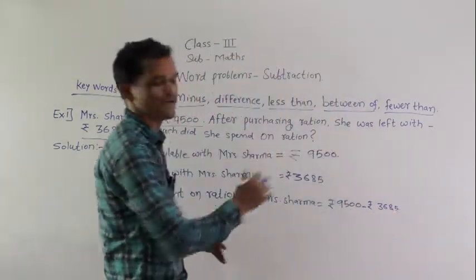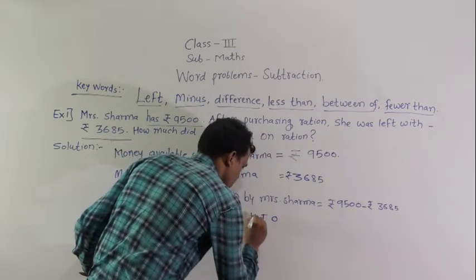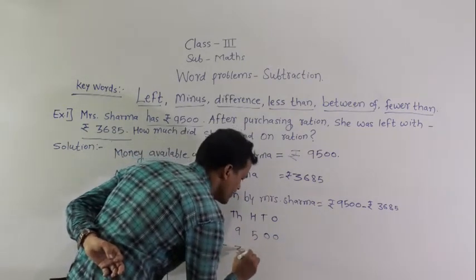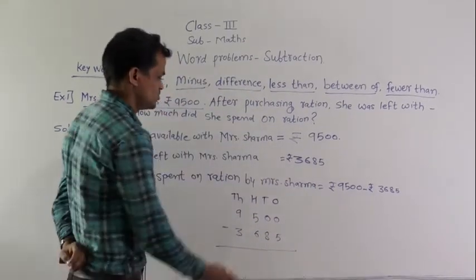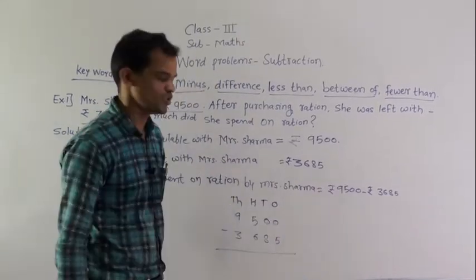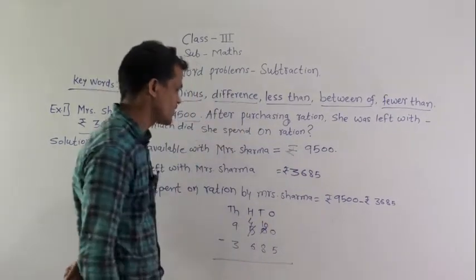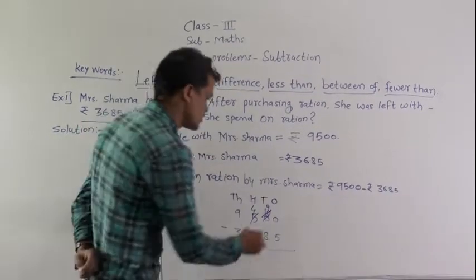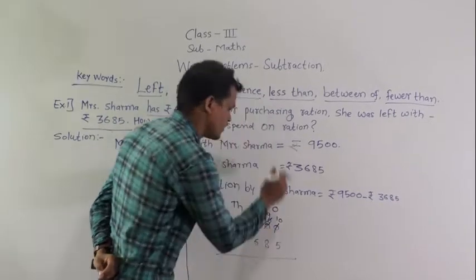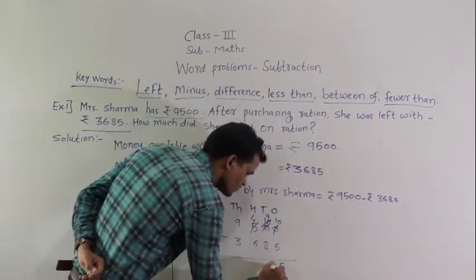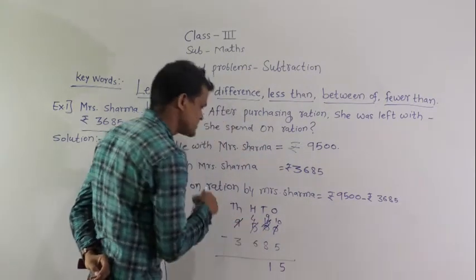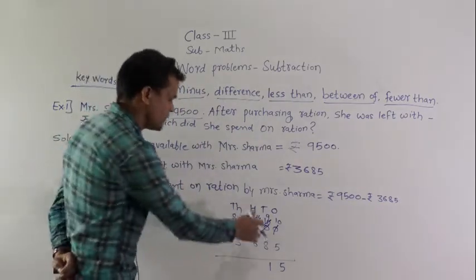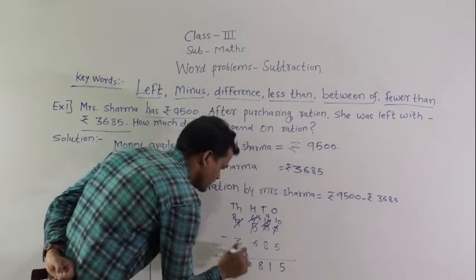Now do the subtraction: 9500 minus 3685. Since 0 minus 5 is not possible, and the tens place also has 0, we need to regroup. After regrouping: 10 minus 5 = 5; then continuing with regrouping, 14 minus 6 = 8, and 8 minus 3 = 5.